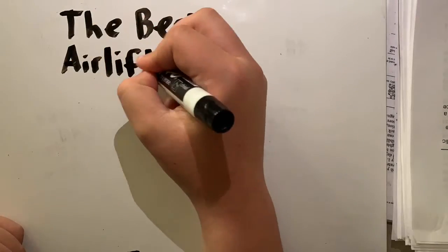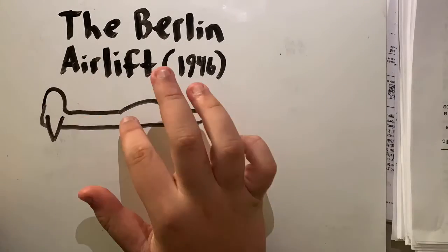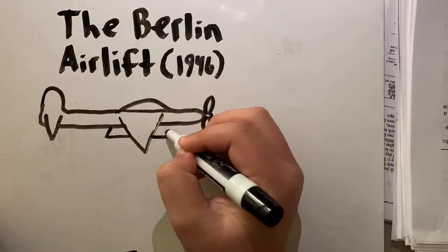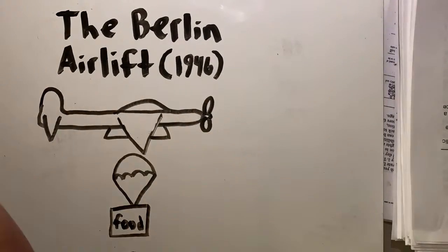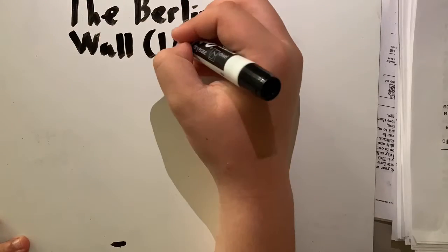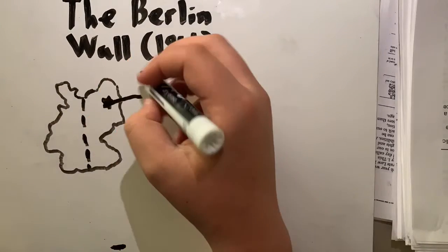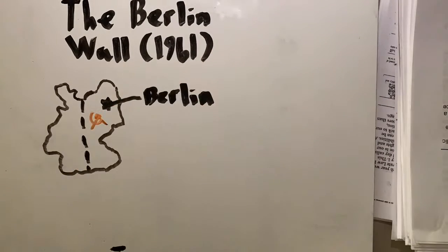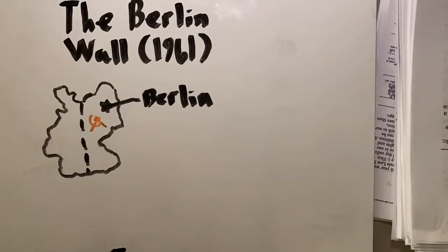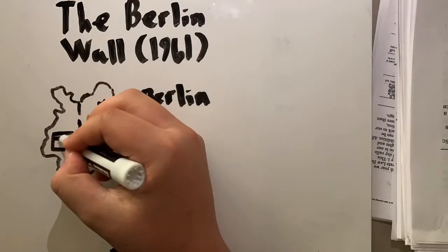First, we have to start off with the Berlin Airlift, which basically started the conflict as the Russians did not agree with the US sending help to the citizens of East Berlin who had no food at the time. Eventually in 1961, the Berlin Wall was established to divide East and West Germany, with Berlin being a center spot. The Soviets had the East and West Germany was free.